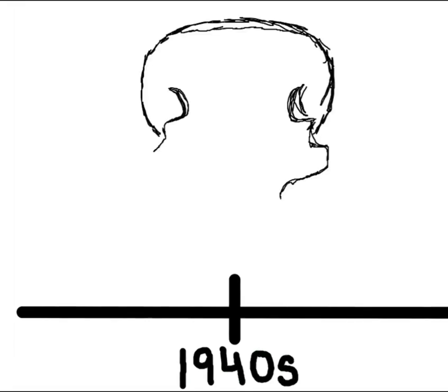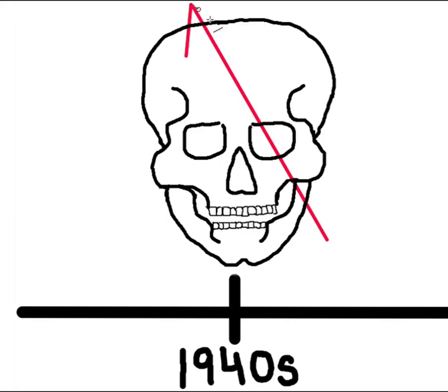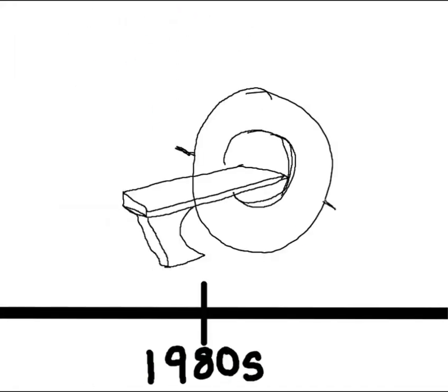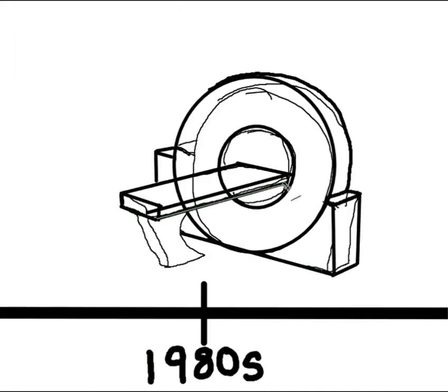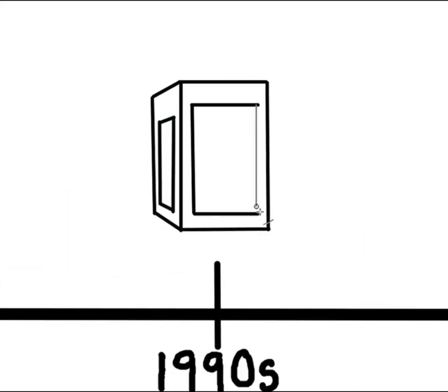In the 1940s, Stanley Cobb diagrammed the skull to determine the path of the tamping iron. In the 1980s, scientists tried to determine the path of the tamping iron using CT scans. In the 1990s, scientists used a 3D printer to determine the path of the tamping iron.